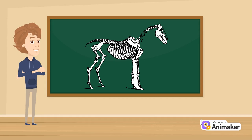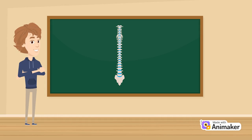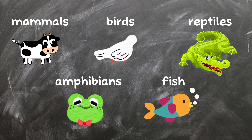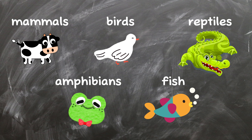Vertebrates are animals that have a backbone, just like you and me. This backbone, also called a spine or vertebral column, is made up of a series of bones called vertebrae. It gives vertebrates the ability to stand upright and provides support for their bodies. Vertebrates are a diverse group that includes mammals, birds, reptiles, amphibians, and fish, each with unique characteristics and features.